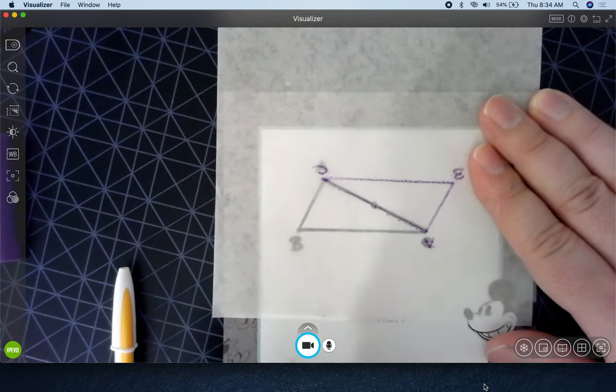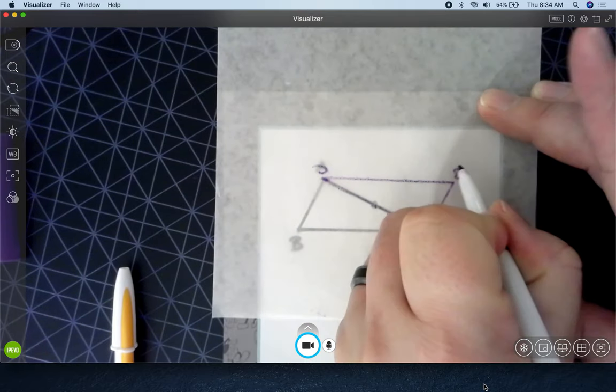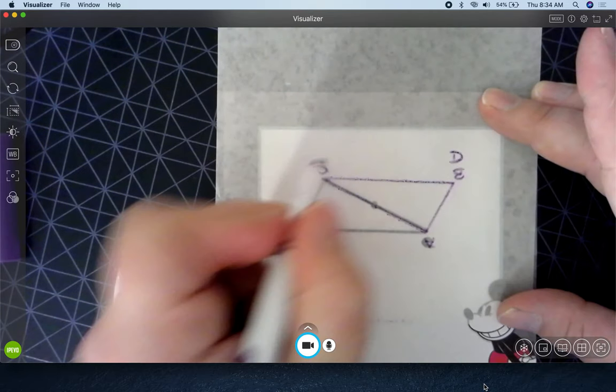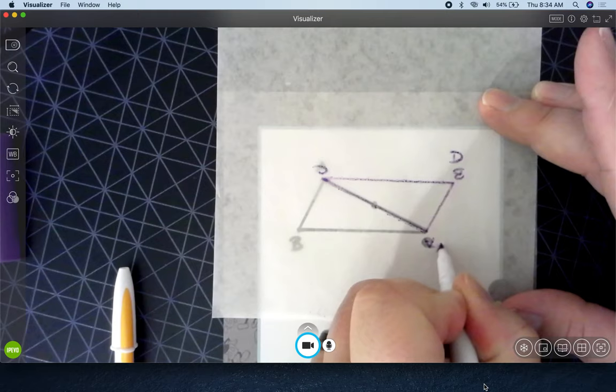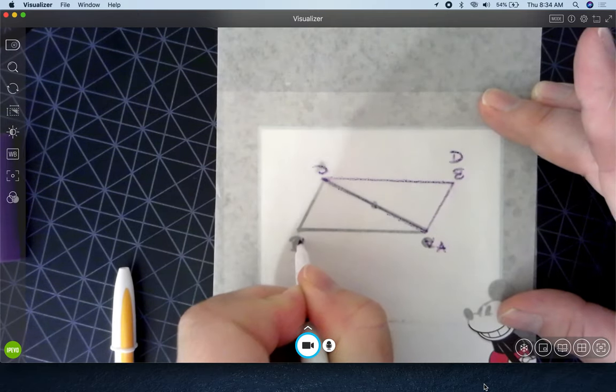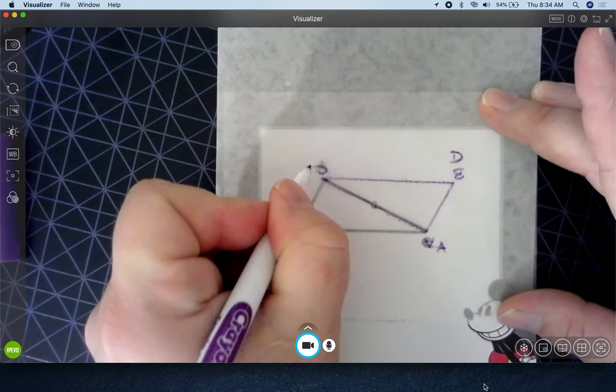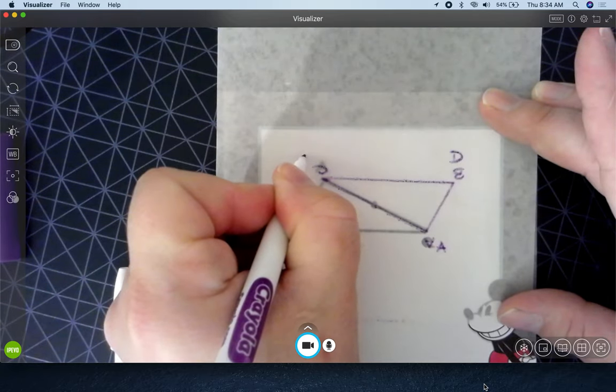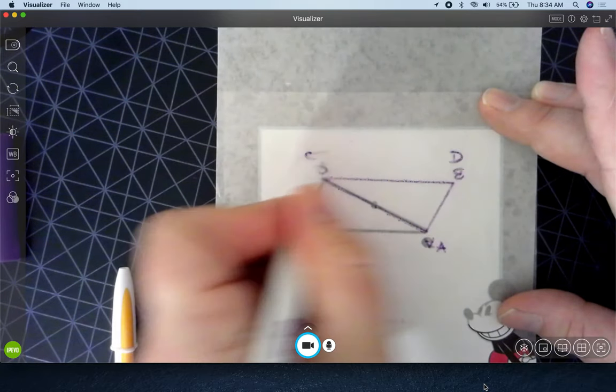But how did we figure out that this was a parallelogram? And we labeled this D, right? And now A is down here. B is still there. And then C is up here. So you have A, B, C, D.